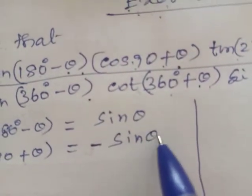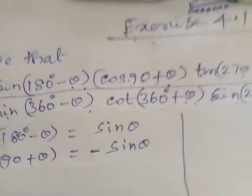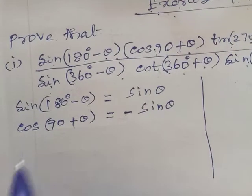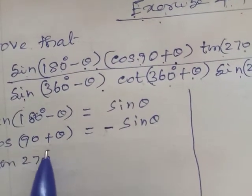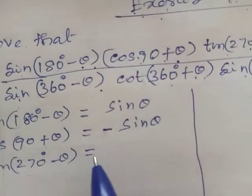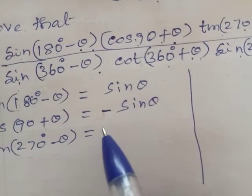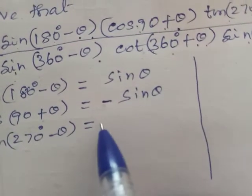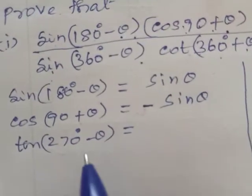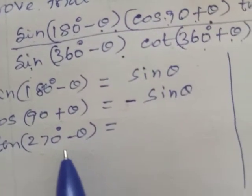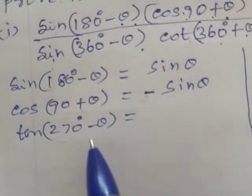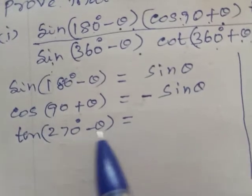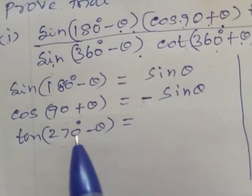Next, Sin(270-θ): this falls in the third quadrant. In the third quadrant, we analyze Sin(270-θ). The angle 270-θ corresponds to the third quadrant form, giving us minus Cos θ.